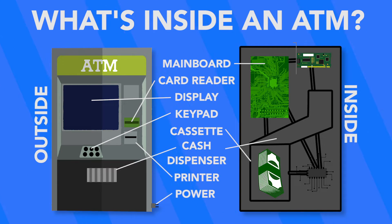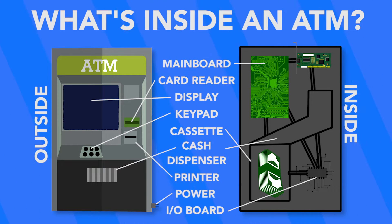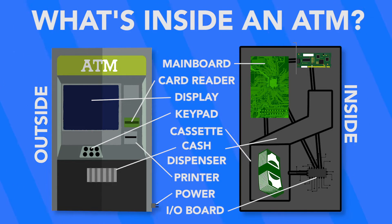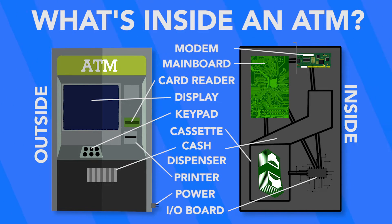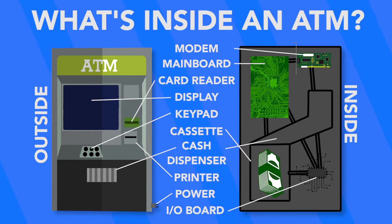Then there's the printer that prints your receipt, and the power supply that supplies external power to the ATM. Then there's the I-O board — a circuit that controls the communication between the processor and the internet or phone line. Finally, there's the modem, which executes the communications from the processor through the internet.